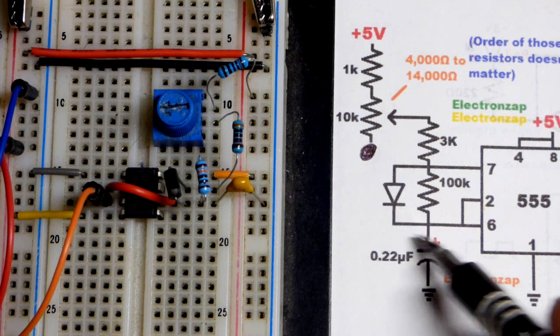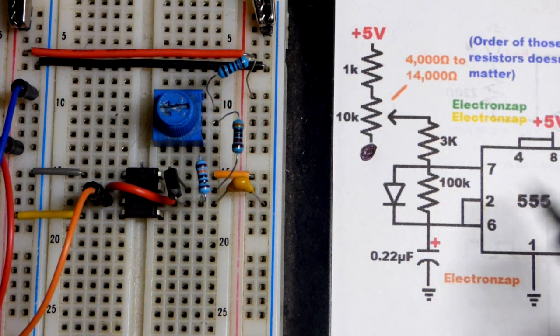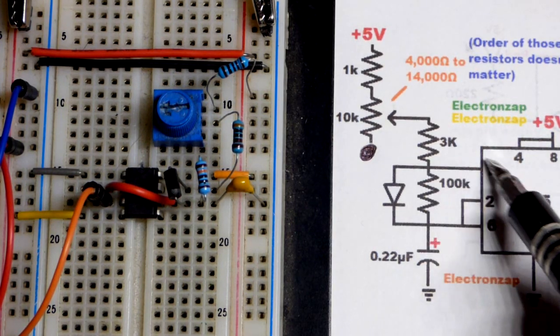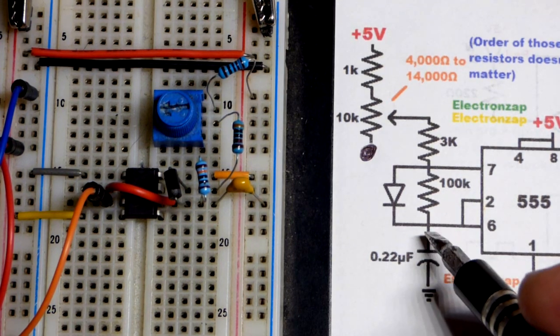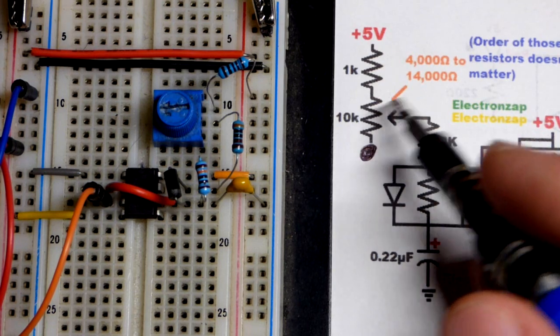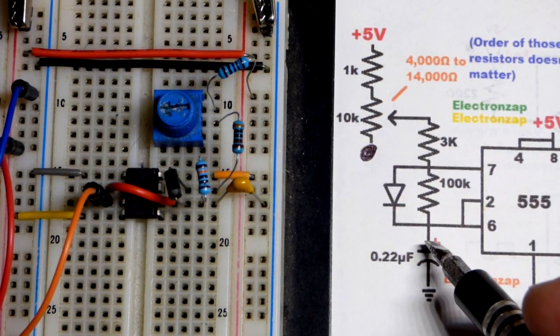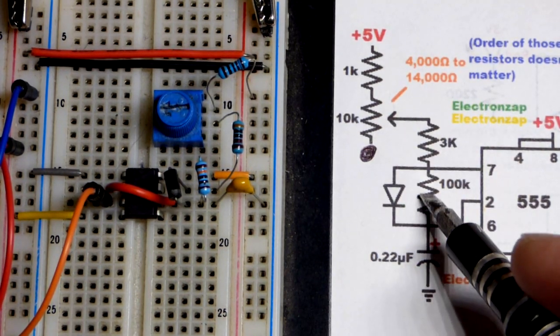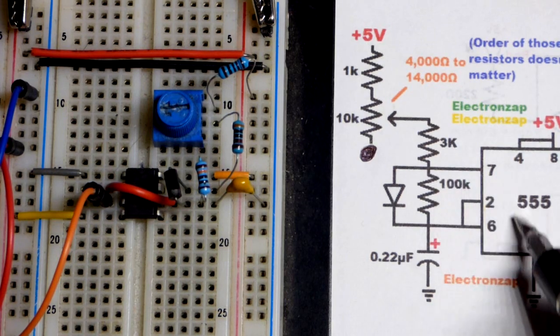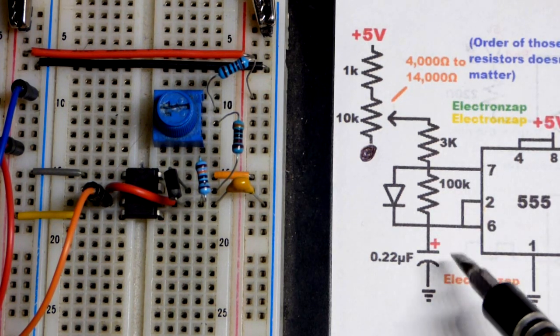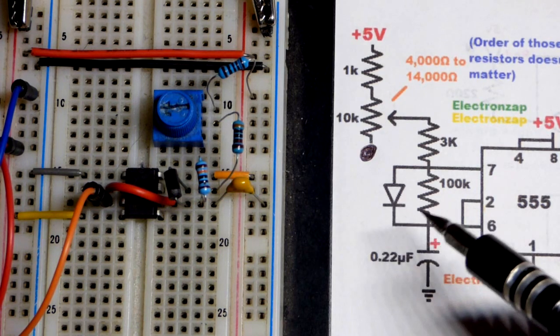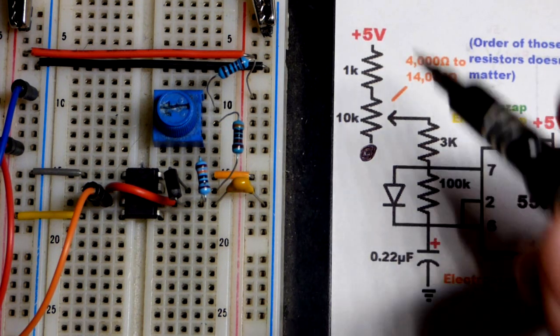Once it gets to two-thirds supply voltage, then the output goes low and this discharges through pin 7. That was the longer period of time. There you can see we have, depending on our setting here, somewhere between about 20 to 10 times as much resistance right there.